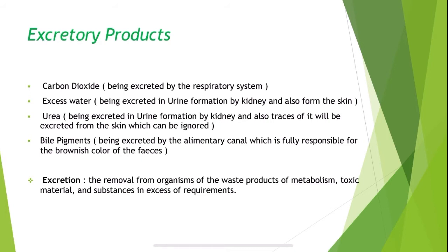Next, excess water, which is excreted in urine by the kidney and also from the skin — so there are two places where excess water is removed from the body. The third excretory product, urea, is excreted in urine by the kidney but formed by the liver, and small amounts are also excreted from the skin. The last excretory product is bile pigments, excreted by the alimentary canal, fully responsible for the brown color of feces.